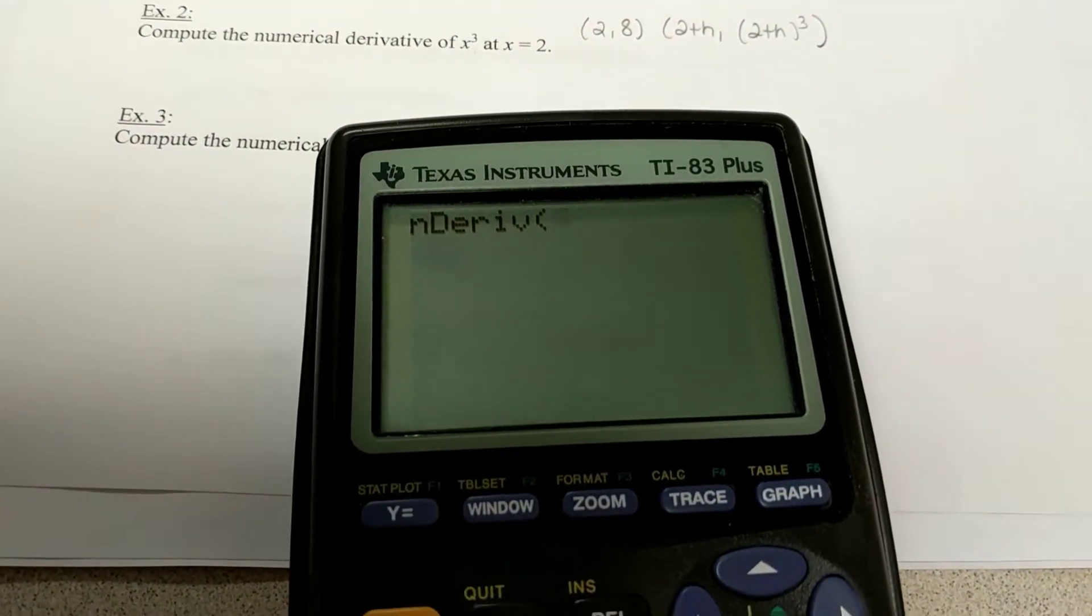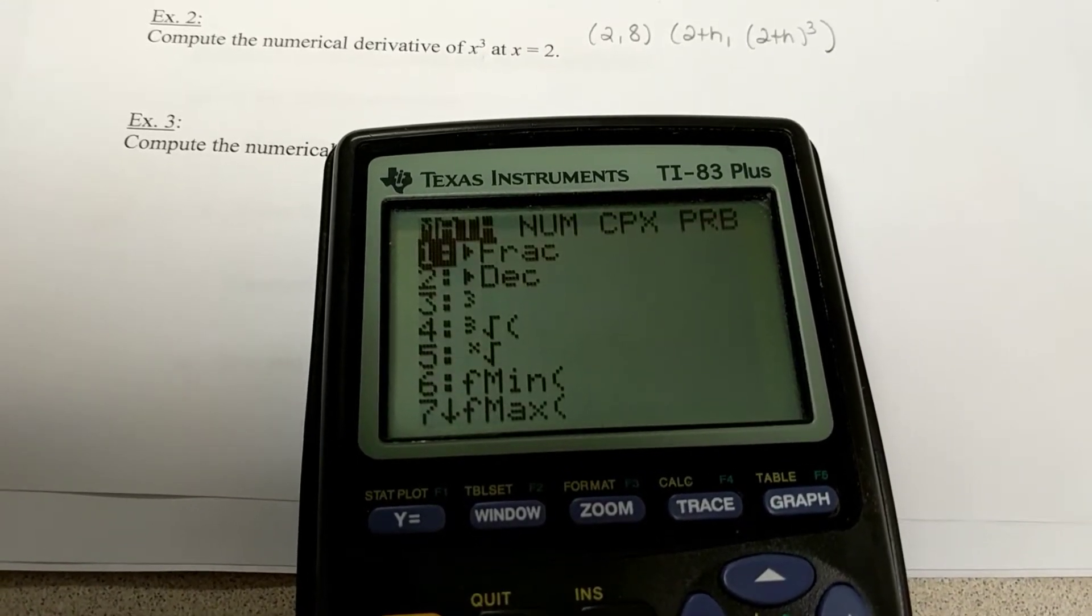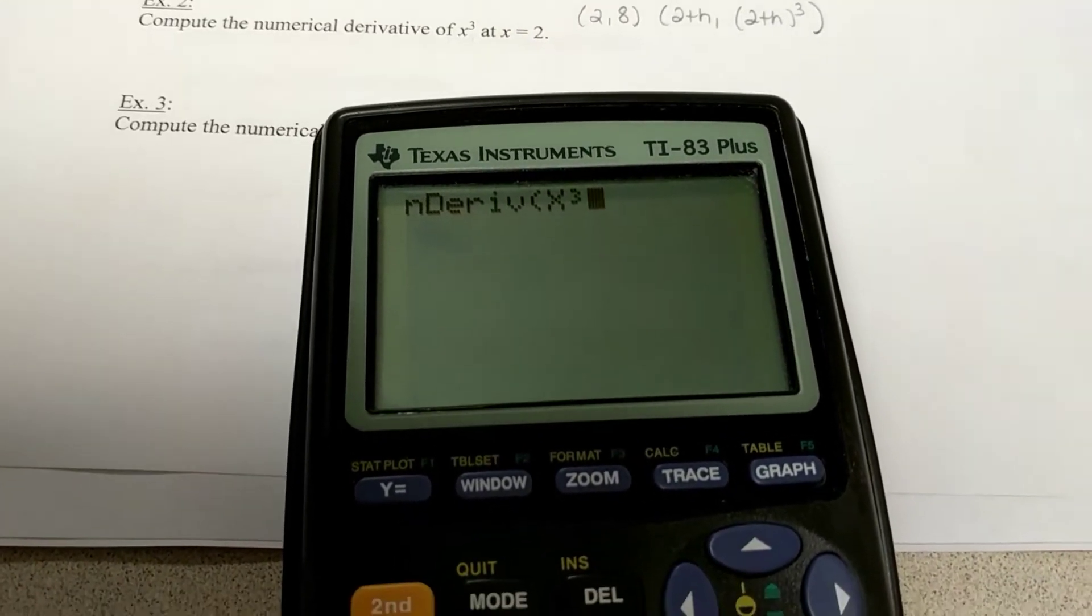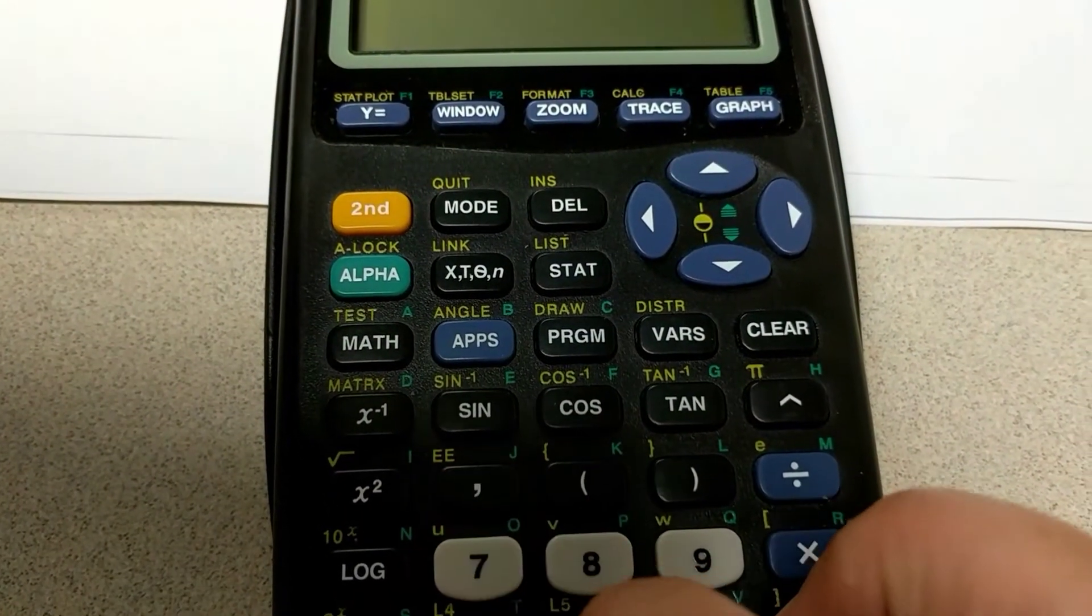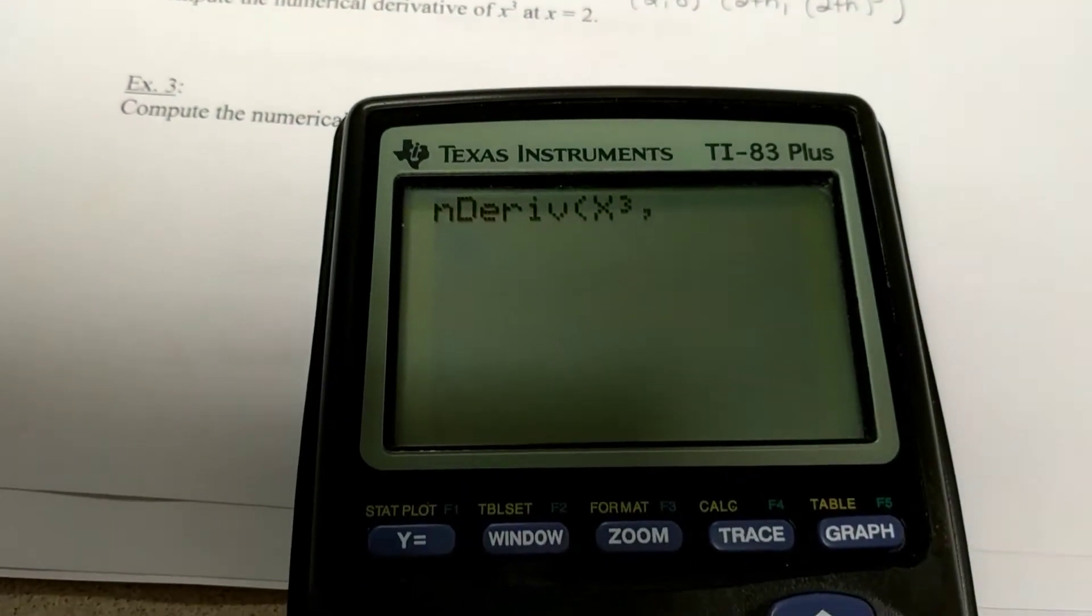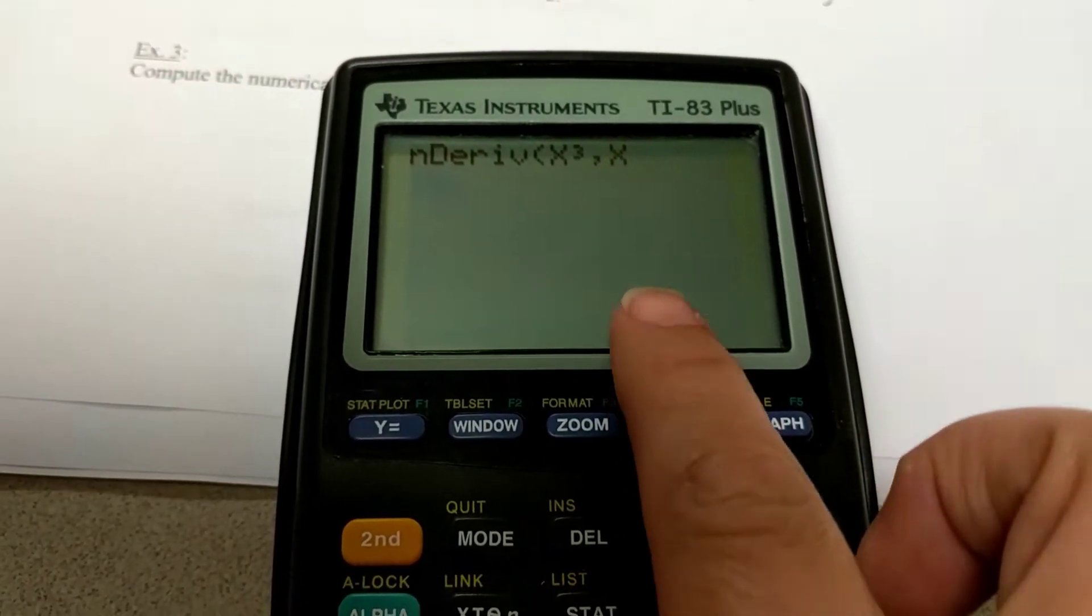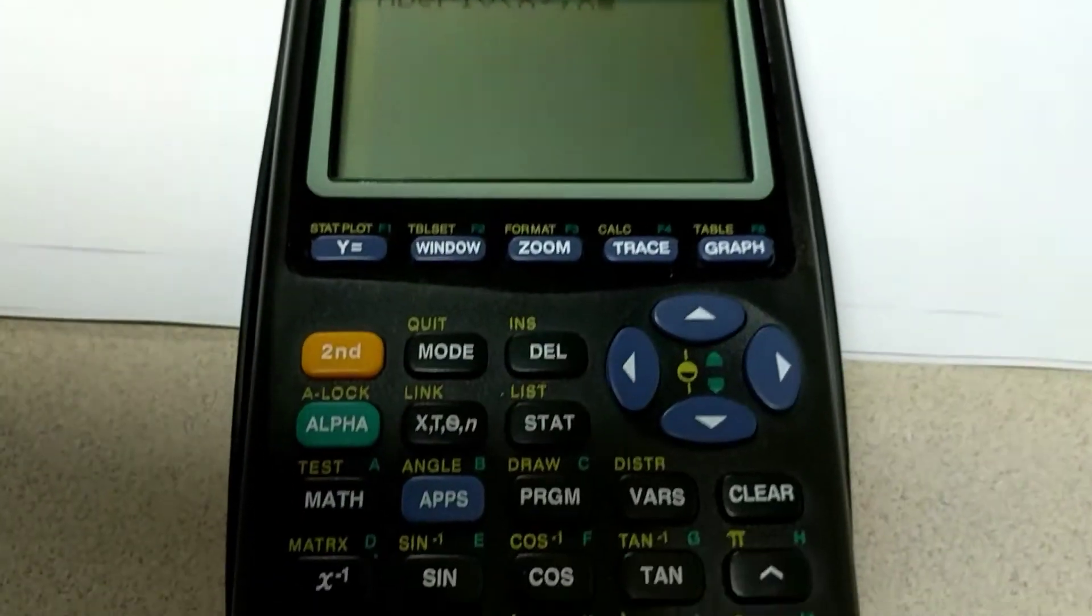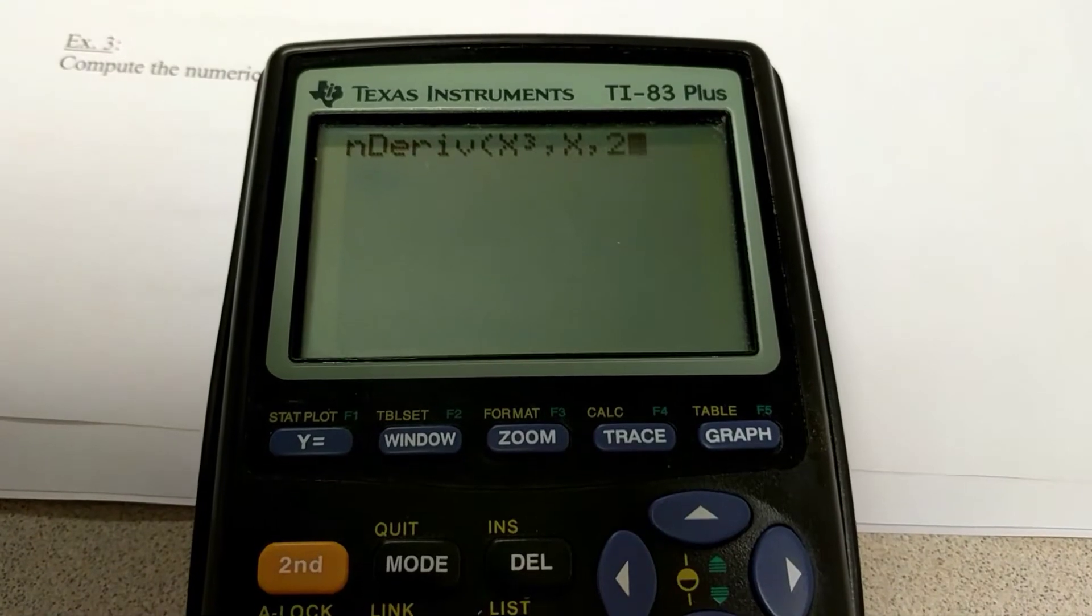So, in my calculator, I'm going to hit x cubed. Then I have to hit comma. And comma is right there above the number 7. And then we're going to put x to say we're doing the derivative with respect to x. And then we do comma again. And then they said at x equals 2.